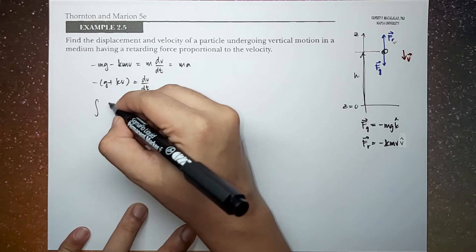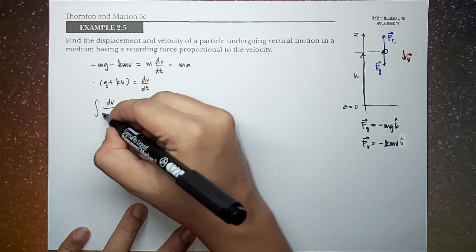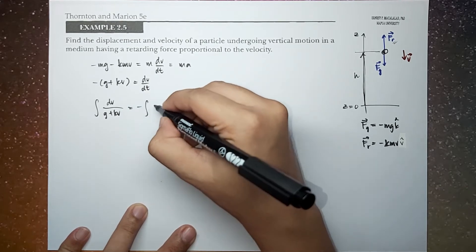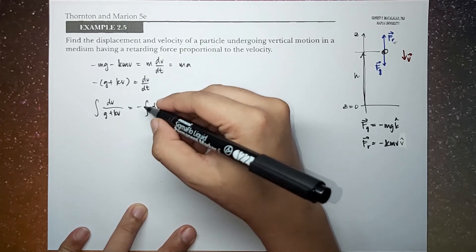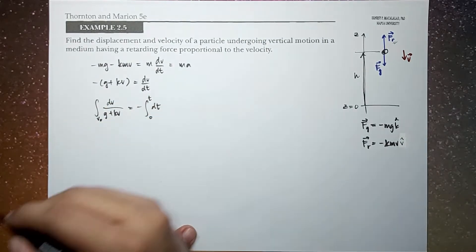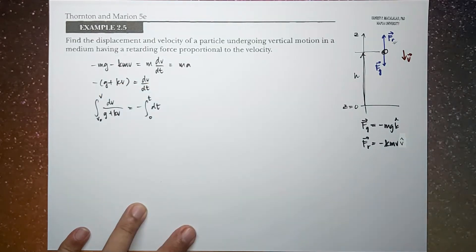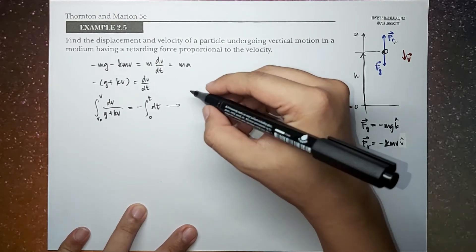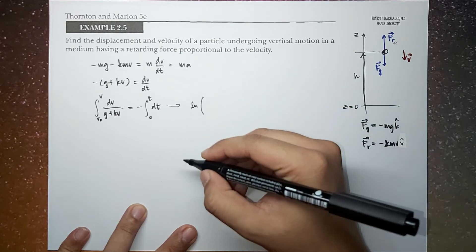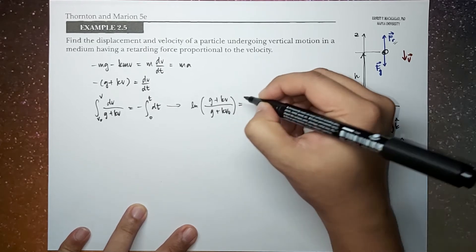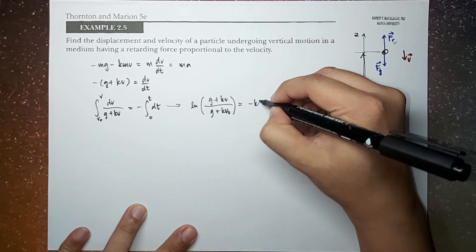We now have the integral of dv over (g plus kv) equal to negative integral of dt. If at time equal to zero the velocity is v-naught, then at time t the velocity is v. Solving this, we end up with the expression: the natural logarithm of (g plus kv) divided by (g plus kv-naught) equals negative kt.